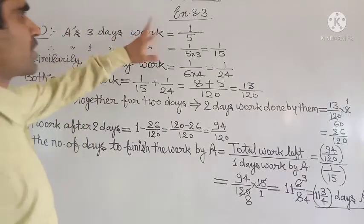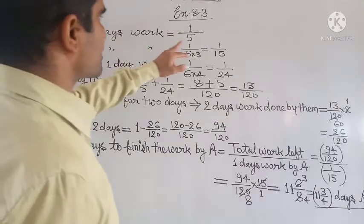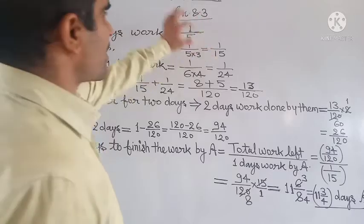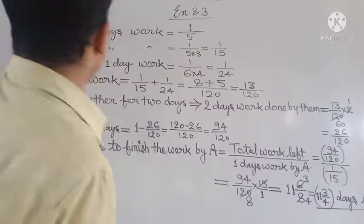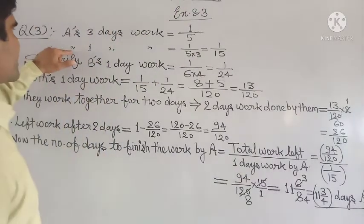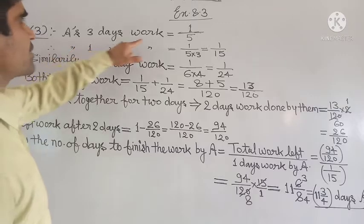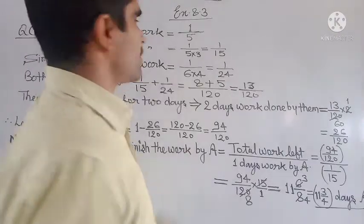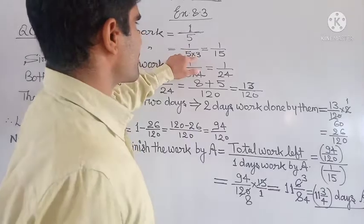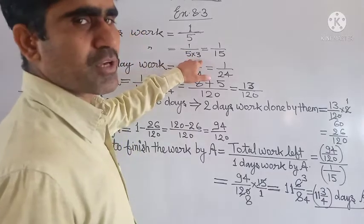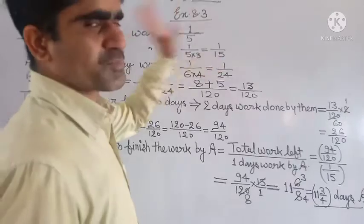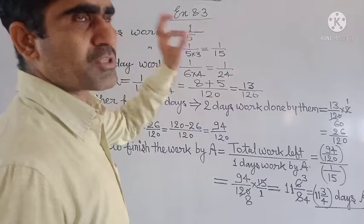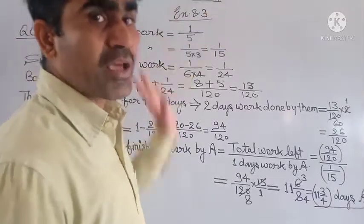A's 3 days work is 1 upon 5. Therefore, A's 1 day work will be 1 upon 5 divided by 3, so 1 upon 15 part of the work will be done by A in 1 day.